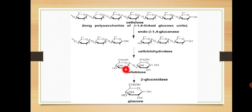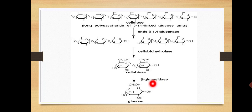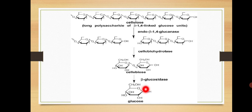Now we have obtained a two glucose unit fragment, known as cellobiose. In the third step, there is action of beta-1,4 glucosidase. Beta-1,4 glucosidase hydrolyzes di-, tri-, and oligosaccharides to form single glucose units. We have a disaccharide (cellobiose), and this enzyme cleaves it into single free glucose molecules.